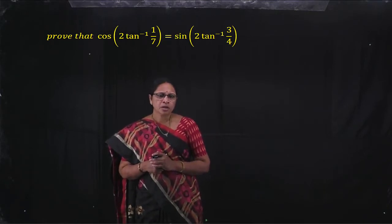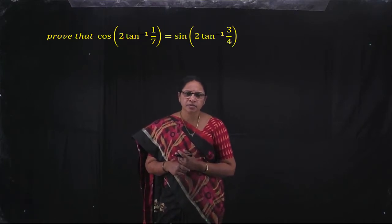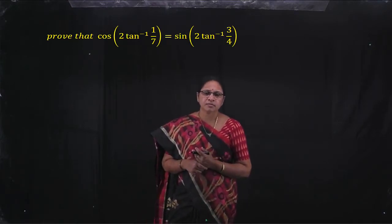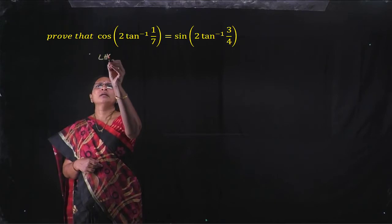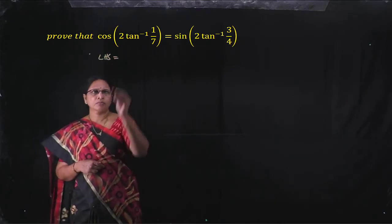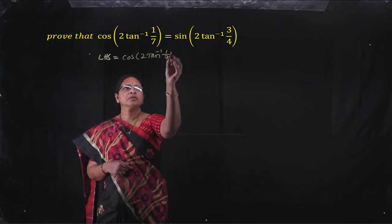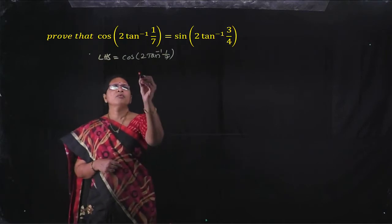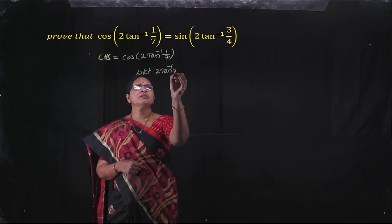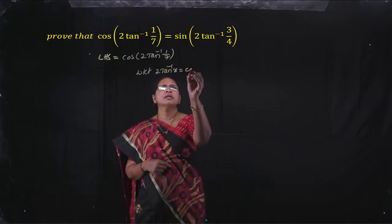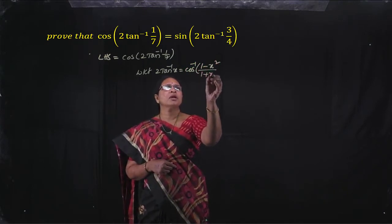We know the formulas for 2 tan inverse x in terms of sin inverse and in terms of cos inverse. Take the LHS part. LHS is equal to cos of 2 tan inverse 1 by 7. We know that 2 tan inverse x in terms of cos inverse is cos inverse of 1 minus x square by 1 plus x square.